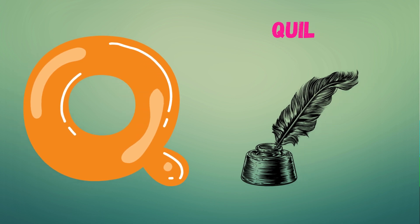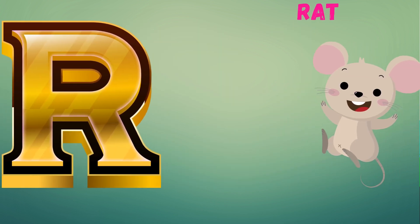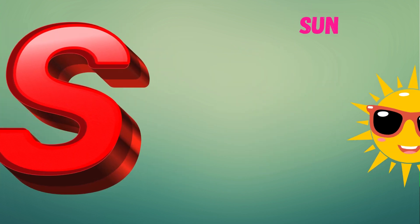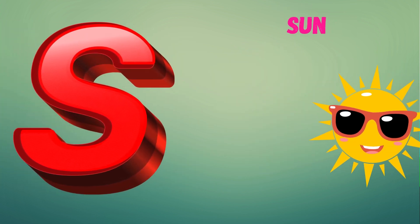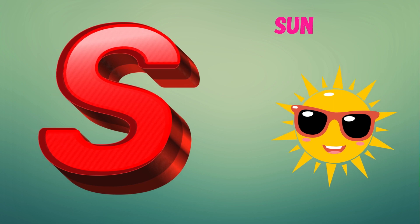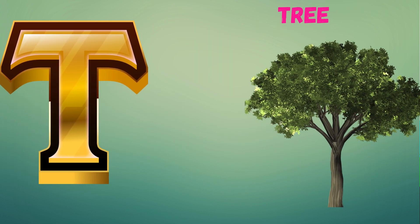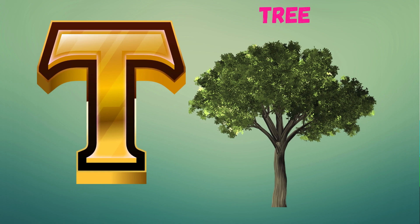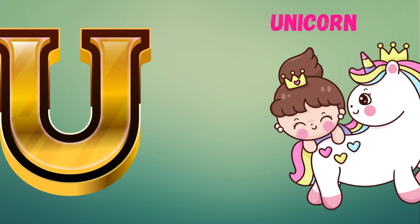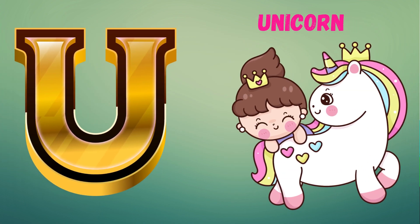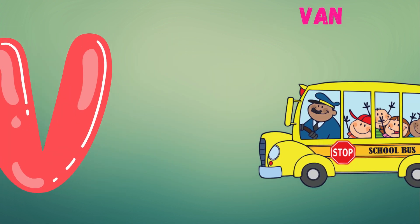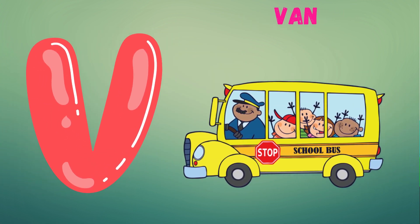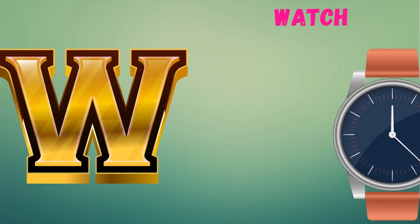R for rat. S for sun. T, U, V. U for unicorn. V for one. W for watch.